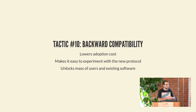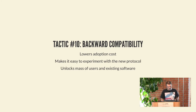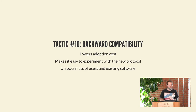Another tactic is backward compatibility, which is a bit broader because there's so much to consider depending on what you're actually dealing with. But the gains are enormous: you lower the adoption cost for people interested in what you're building, it makes it a lot easier to experiment, and it unlocks a mass of existing stuff. That's one of the big problems with IPv6 again — stuff doesn't support it properly. If you're backward compatible, it's not an issue.